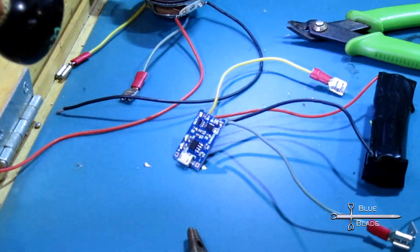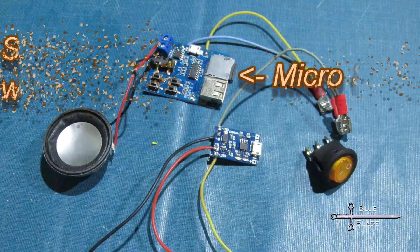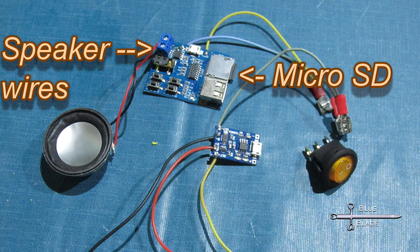Now that it's wired, test the electronics. Put a few tracks on the microSD card and insert it into the MP3 board and then temporarily connect the speaker.